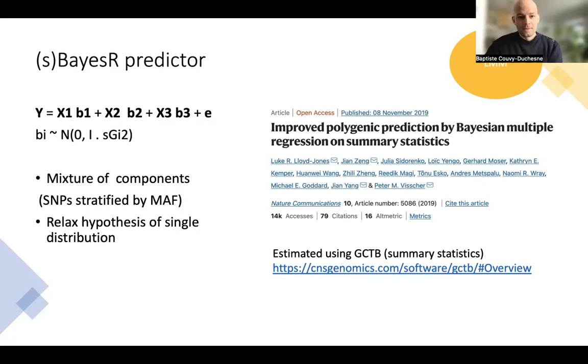In practice, what this means is that we have relaxed the hypothesis of a single distribution, which we have often in the ACE twin model or when we estimate SNP heritability. But in practice, this means that we can have a much better fit to the data because we relax our assumption of a single distribution of effect sizes b. In practice, this can be done using the software called GCTB, and it also takes in summary statistics to make the computation easier.